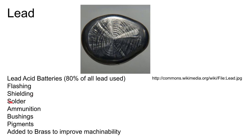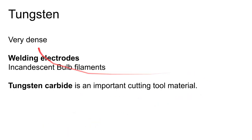Lead is still used in solder in the United States, though much less so in Europe where it may not be allowed at all. It's still used in ammunition, though lead shot is being replaced by steel shot and tungsten shot.